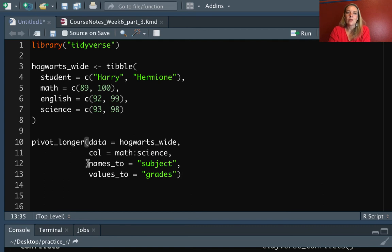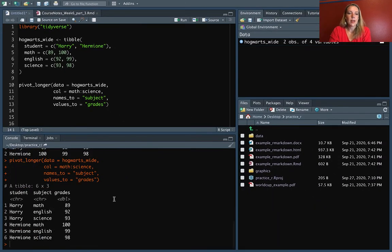Now, a thing to note here, for this names_to and values_to, when we're pivoting longer, we get to pick what we want to put in for these different values. These will become the column names, but it's not something that's in the data already, so you really get to pick something sensible for that. So let's run that. And now you can see it has pivoted that data down. So now we have a separate column for subject and a separate column for grades.